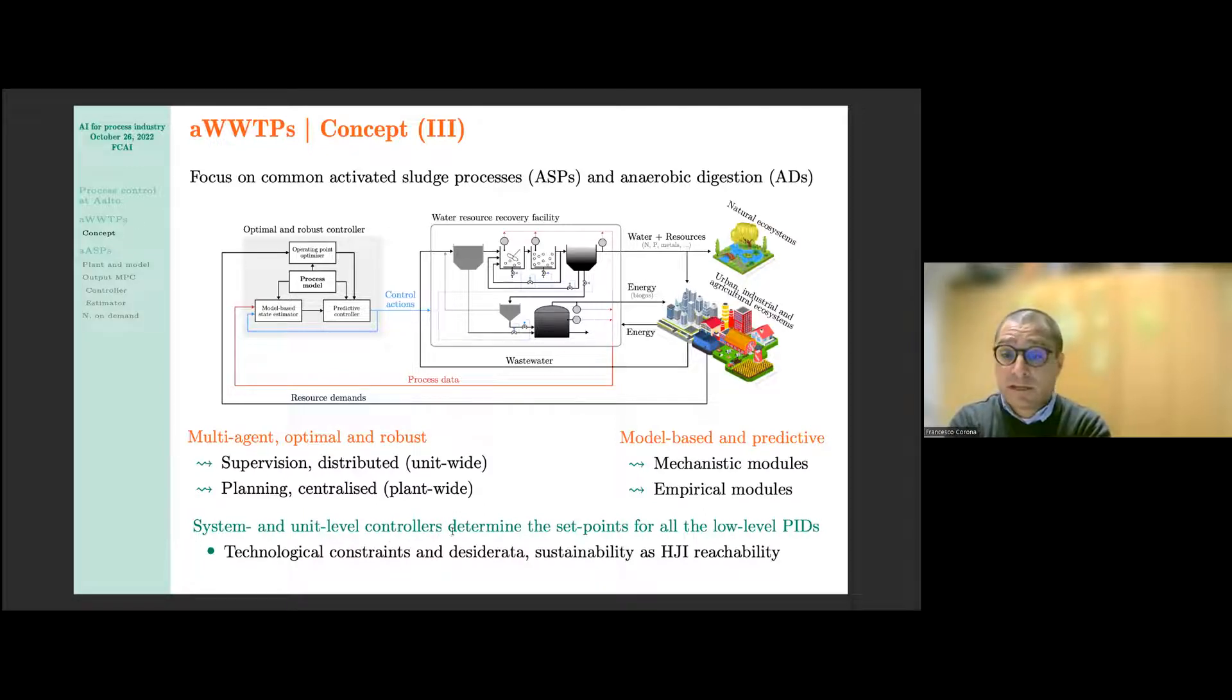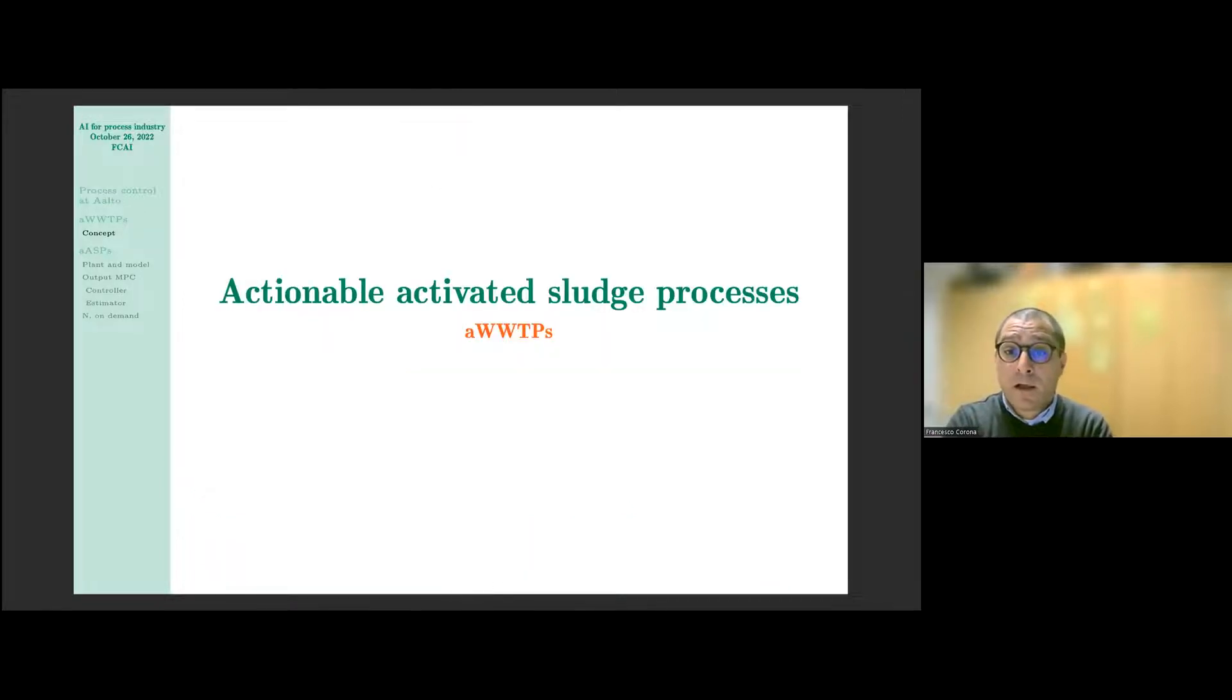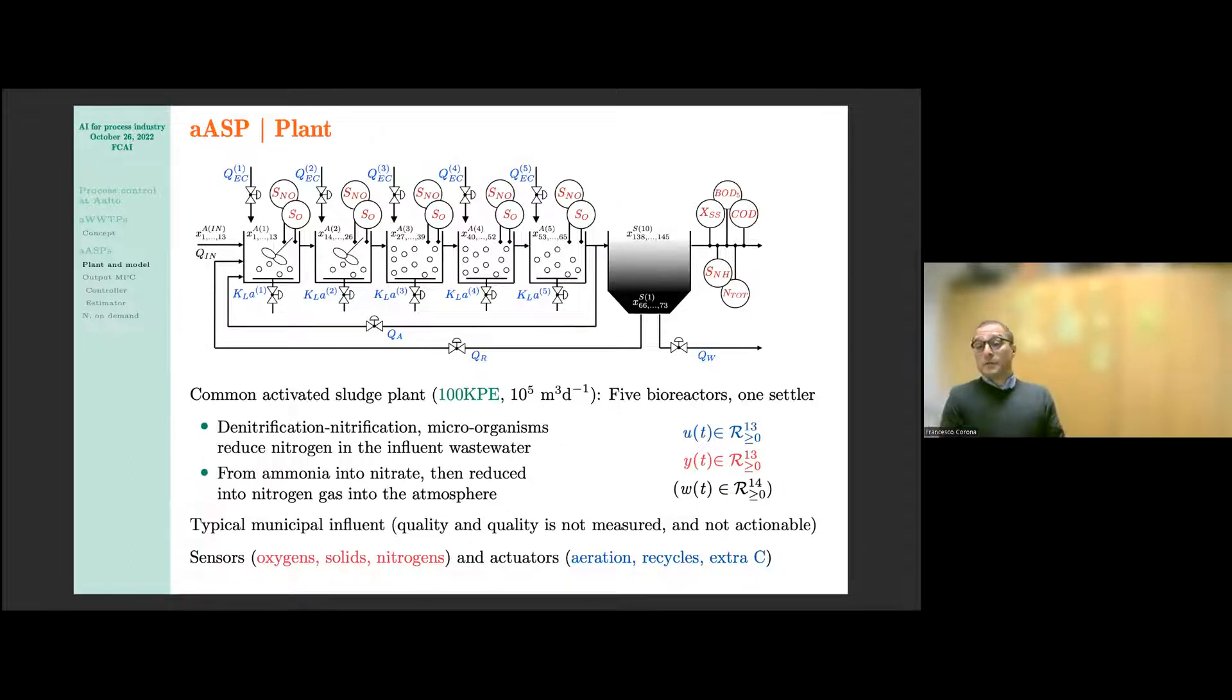The controllers should encode all the technological constraints that are typical in an industrial setup, which are mainly related to equipment specifications and some desiderata, which means we would like to operate in certain conditions. One of these conditions could be, for example, within certain sustainability bounds. In our specific case, these bounds are defined by a set of reachability sets that solve some sort of a Hamilton-Jacobi-Isaac type of min-max problem.